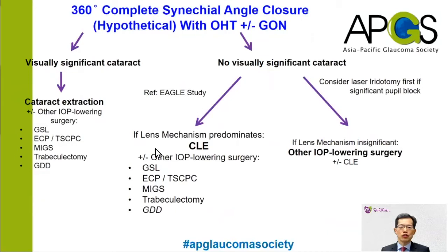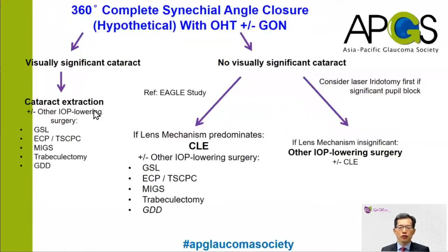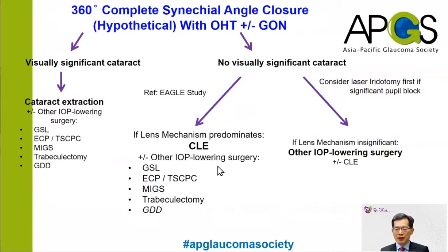In the second hypothetical situation, we have 360 degrees complete synechial angle closure. Under these circumstances, even if you do something to widen the drainage angle, aqueous may still not be able to access the trabecular meshwork because of peripheral anterior synechiae. So in this scenario, if there is a visually significant cataract, you may have to consider cataract extraction plus or minus one other IOP lowering procedure. If there is no visually significant cataract, you need to decide whether the lens is the predominant mechanism. If the lens is the main mechanism, then you would perform clear lens extraction plus or minus one other IOP lowering surgery, depending on the severity of the glaucoma, IOP control, and individual patient and surgeon factors. If the lens is deemed not a significant mechanism, then you may perform one of these IOP lowering procedures with or without clear lens extraction.